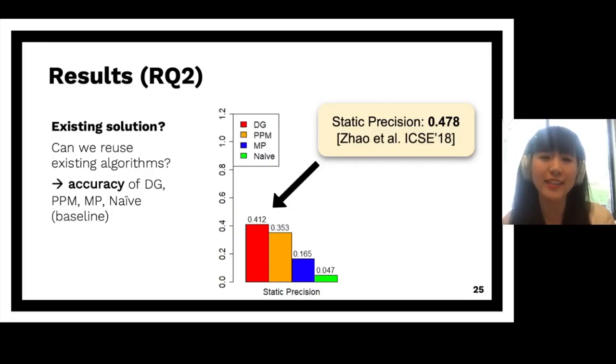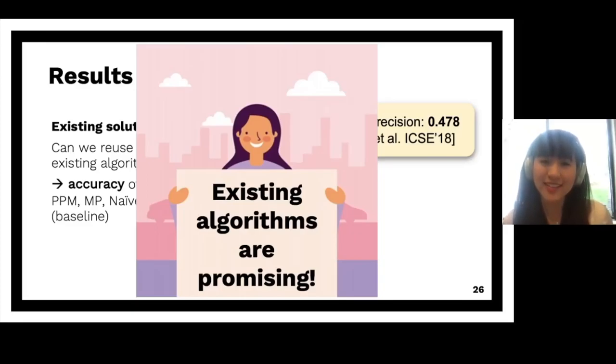So another interesting finding is that the best performing algorithm, DG, on the left of the red bar, achieved the static precision of over 40%, which is kind of comparable to the state-of-the-art prefetching technique Paloma that I mentioned. That's what I presented at ICSI 2018. So this shows that existing algorithms are very promising because we apply them as is without any optimization or fine tuning. And that already achieved kind of comparable results to the state-of-the-art. So this means we could probably improve them even more and reuse them instead of inventing new algorithms from scratch.